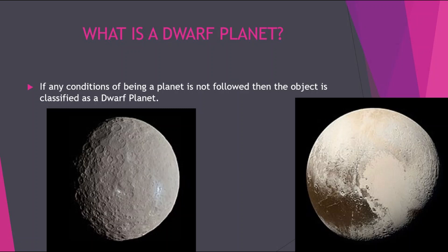Well, if any of these conditions of being a planet is not followed by an object, then it is directly classified as a dwarf planet. Most of us have grown up thinking that there were nine planets in the solar system, with the ninth one being Pluto.